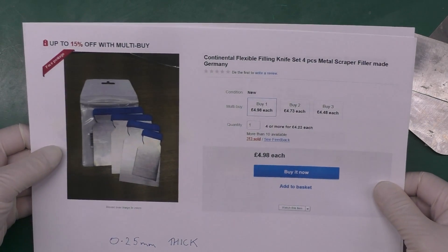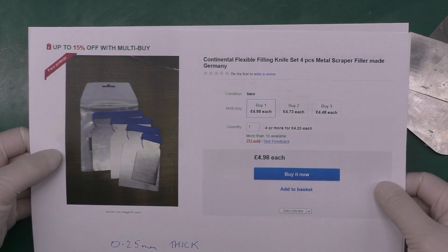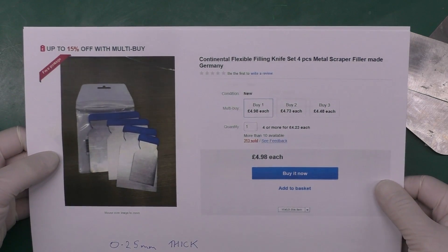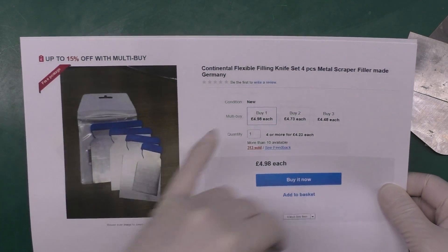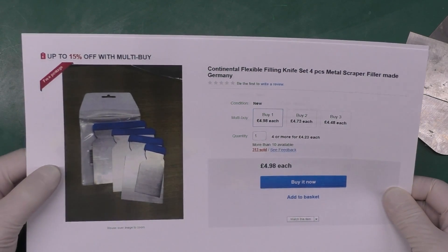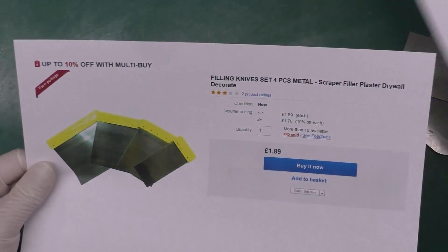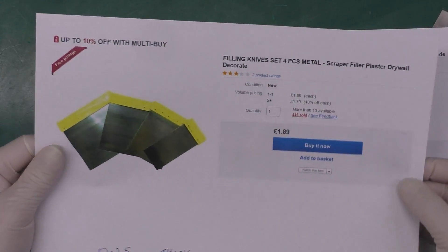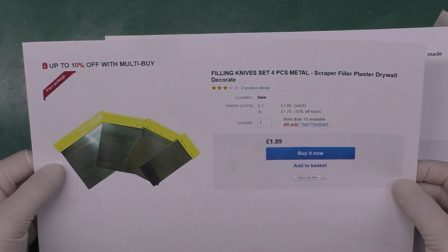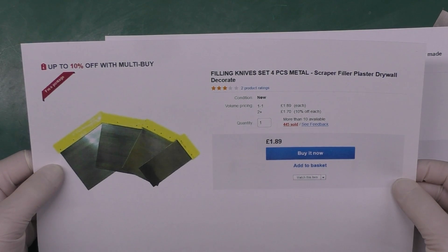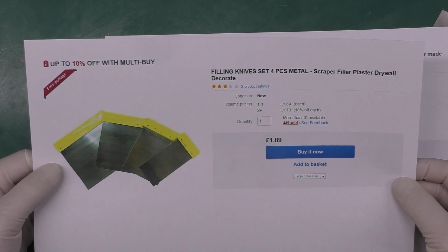This is an eBay print here. I think that's probably the ones that I purchased. Known as flexible filling knives, set of four, metal scraper, filler made in Germany. And another set here looks to be very similar, quite a bit cheaper. Filling knives, set of four, metal.